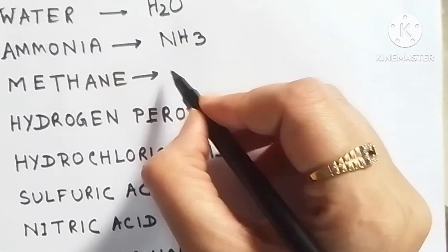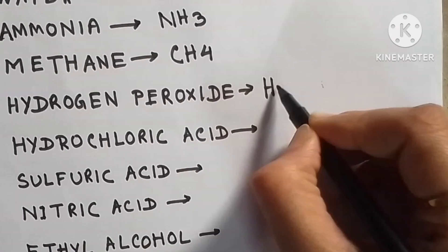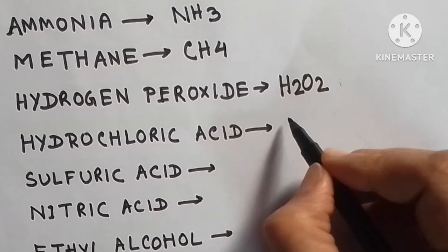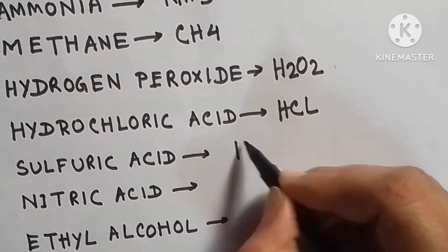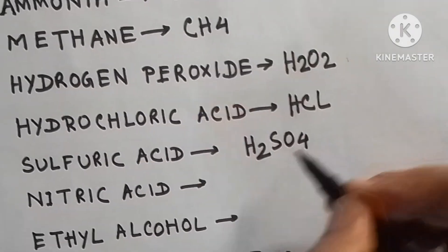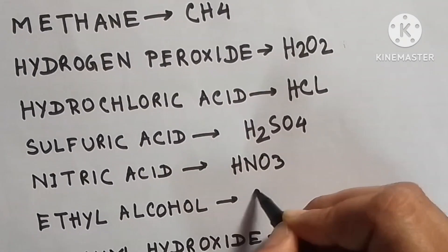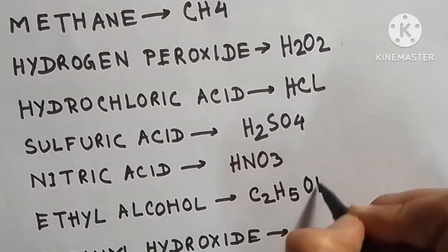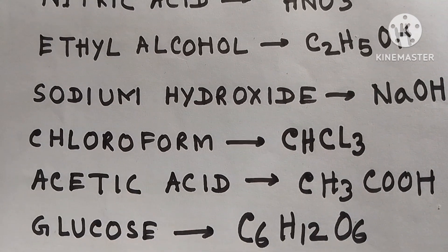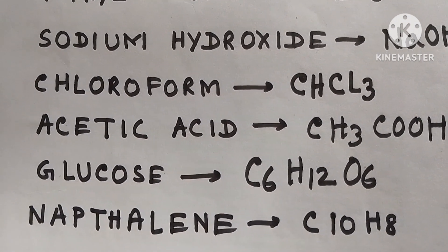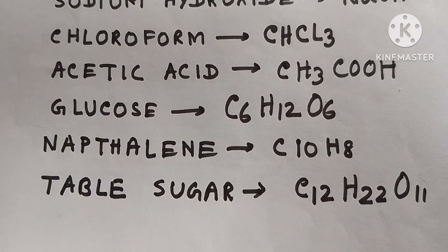More hydrogen compounds include: methane (CH4), hydrogen peroxide (H2O2), hydrochloric acid (HCl), sulfuric acid (H2SO4), nitric acid (HNO3), ethyl alcohol (C2H5OH), sodium hydroxide (NaOH), chloroform (CHCl3), acetic acid (CH3COOH), glucose (C6H12O6), naphthalene (C10H8), and table sugar (C12H22O11).